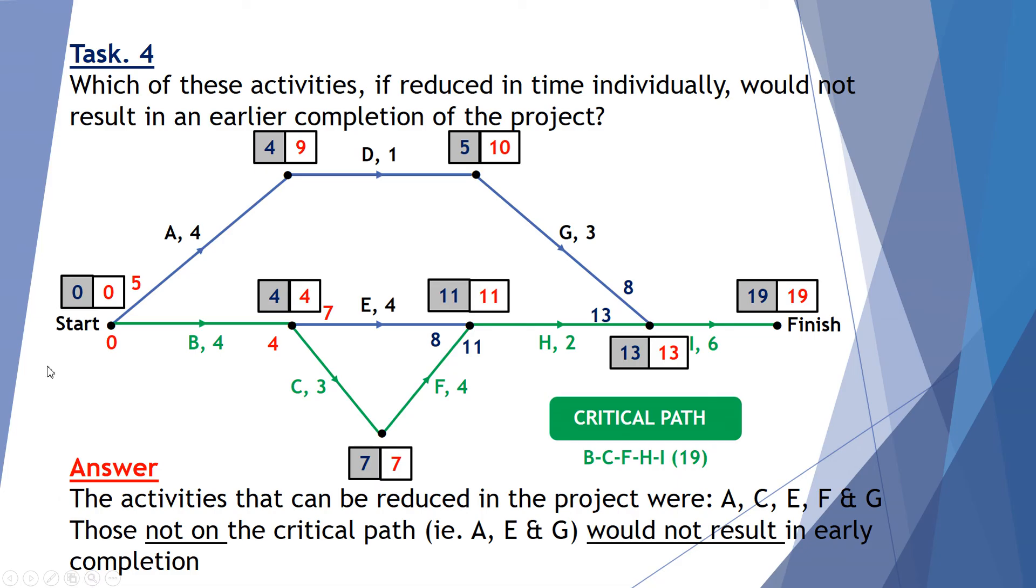So of those A, C, E, F and G. A is not on the critical path. E is not on the critical path. And G is not on the critical path. So we can make them smaller and that won't reduce the overall time of 19. So reducing nothing on the critical path.